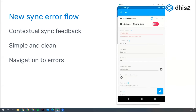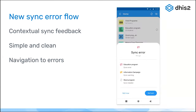When I tap there, it opens the form directly and highlights in red both the section and the field where the problem is. These are three steps to navigate to the error. In this example I showed only one error in one program, but a user might have errors in different programs. Hopefully this facilitates fixing sync errors for the end user.